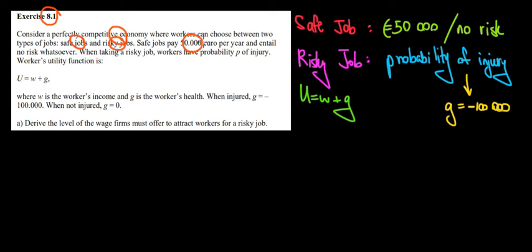A safe job pays 50,000 euros per year and has no risk. A risky job has a probability P of injury, but they do not say how much it pays. The utility function of the worker is W plus G, where W is the salary and G is the health of the worker.